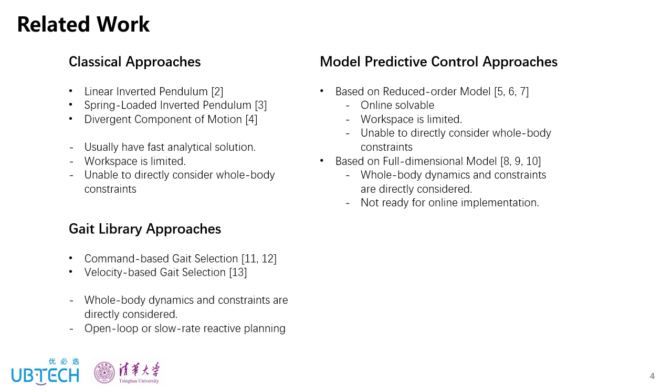There is another type of approach, gate library, which optimize gates offline based on full-dimensional models, and then select gates online according to user command or average velocity. In this way, they can directly consider the whole body dynamics and constraints, but as the gate is only updated once per step, it can be considered as an open-loop or a slow-rate reactive planner. So overall, no related work fully satisfies our requirements.